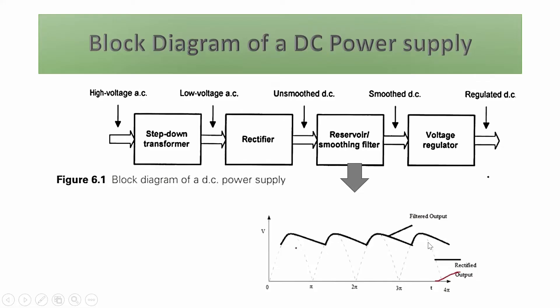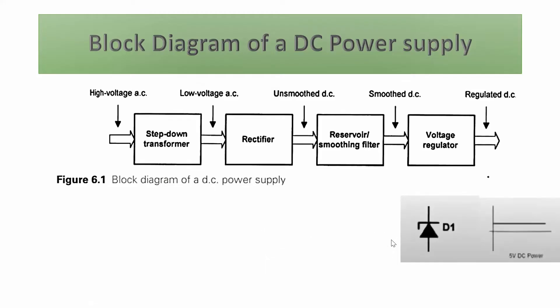The filtered output is unregulated DC, which is regulated by the last stage: the voltage regulator. The voltage regulator can be an IC from the 78xx series or 79xx series for positive or negative voltages respectively, or it can use active components like transistors or a zener diode. Here a zener diode is used. The voltage regulator converts unregulated DC into regulated DC, providing a constant output voltage even when there is a change in current.